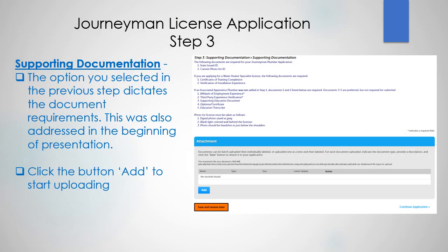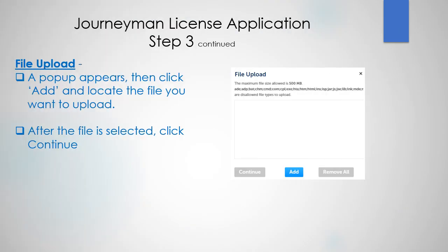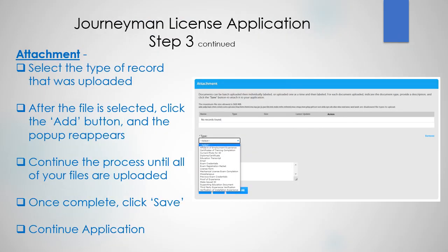Step 3 is all about the supporting documentation. The option that you selected in the previous step dictates the document requirements, as also addressed at the beginning of the presentation. Click the button Add to start uploading. A pop-up appears — click Add and locate the file that you want to upload. After the file is selected, click Continue. Select the type of record that was uploaded, then click the Add button and the pop-up reappears. Continue the process until all of your files are uploaded. Once complete, click Save, then Continue application.